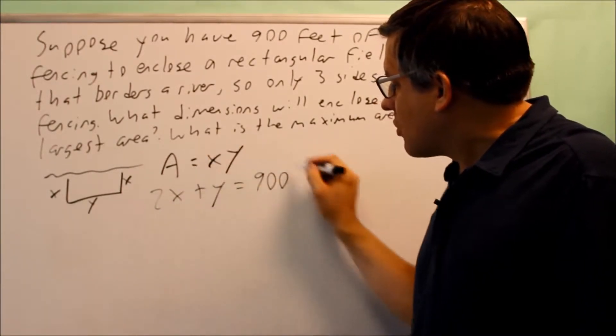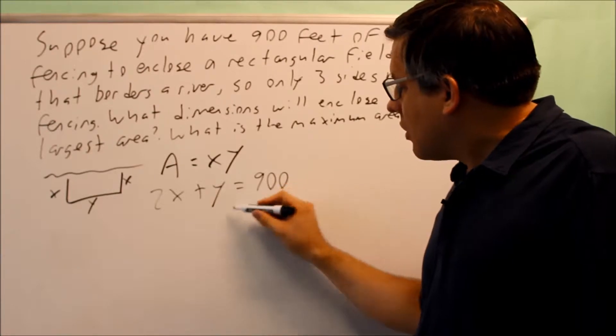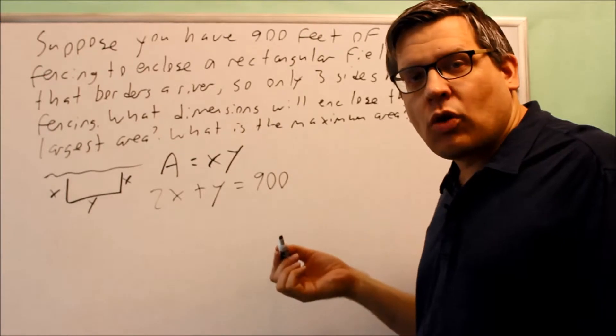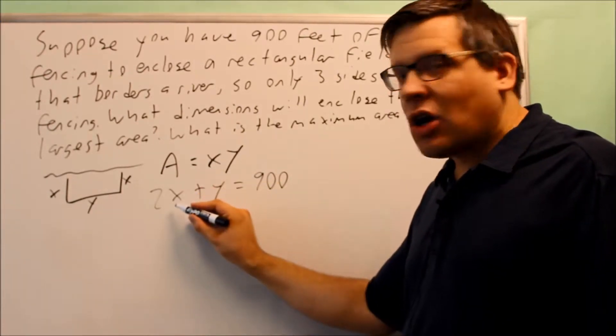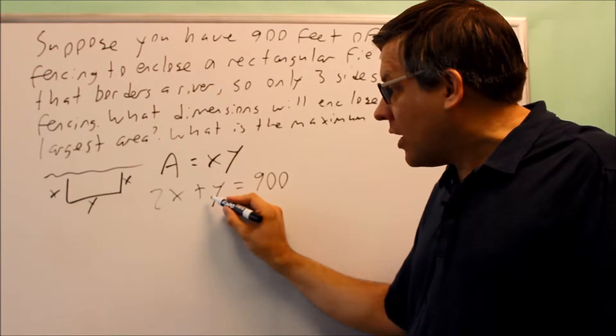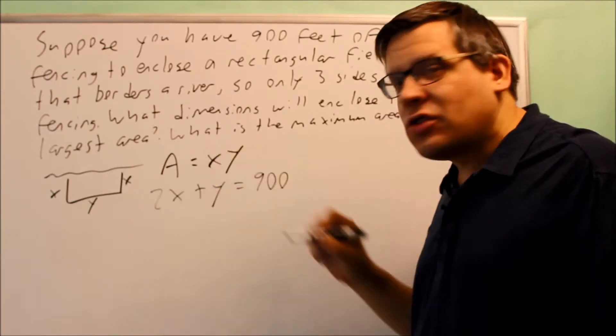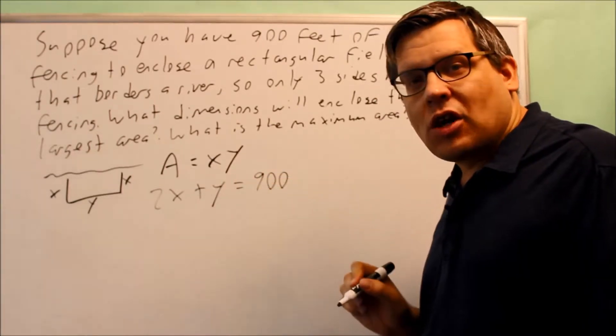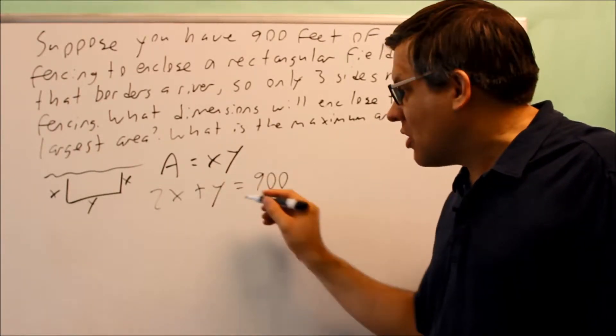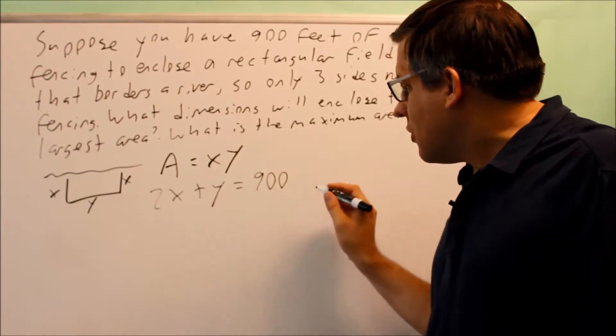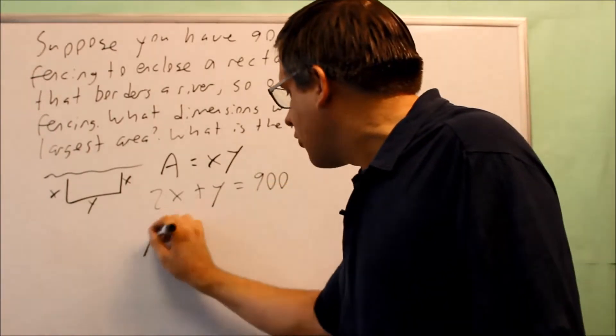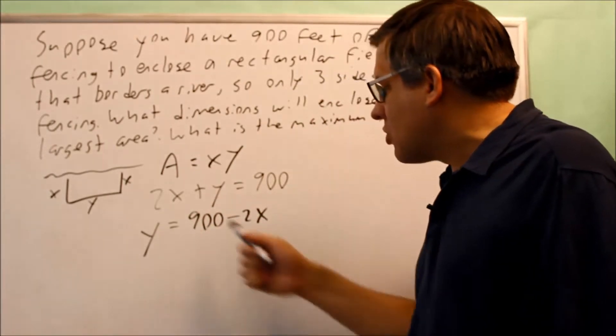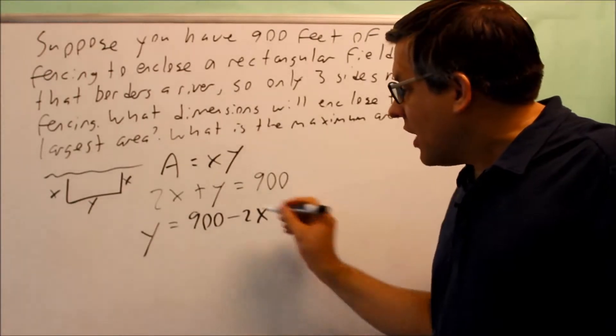What I need to do now is take this equation and substitute it into the first one. If I can get rid of the y and have it all in terms of one variable, that would be easier. It's probably easiest to solve for y. I'm going to take the 2x across the equal sign, so y equals 900 minus 2x.